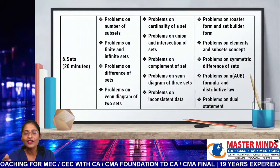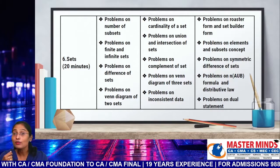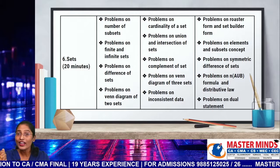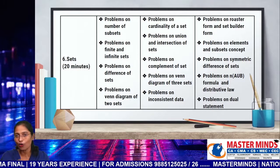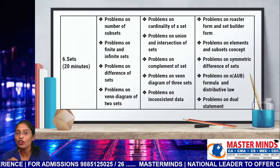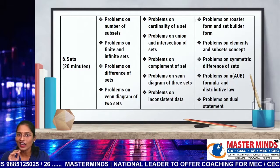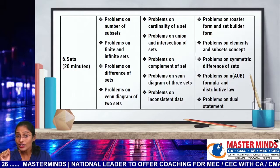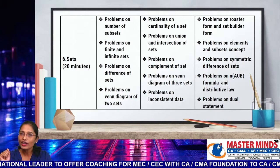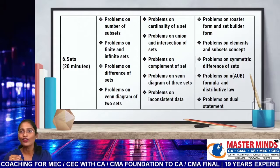The next concept to be revised is the Sets topic. Try to spend 20 minutes on sets. Highest priority models: problems on number of sets, problems on finite and infinite sets, problems on difference of sets, and problems on Venn diagrams related to two sets only — not three sets. Second priority: problems on cardinality of a set, problems on union, intersection and complement of a set, problems on Venn diagrams related to three sets, and problems on inconsistent data. Third priority: problems on roster form and set builder form, problems on elements and subset concept, problems on symmetric difference (A delta B), problems on N of A union B, and problems on dual statements.